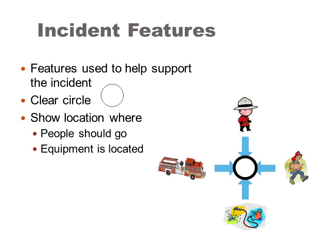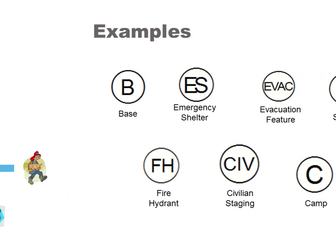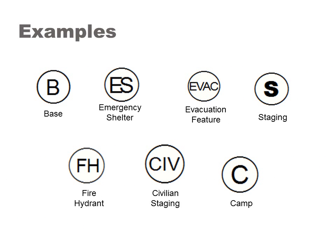Incident Features are features that help support the incident. They're noted by a clear circle, and they indicate where people should go or where equipment is located. Examples of these symbols are base, emergency shelter, evacuation features, staging, fire hydrant, civilian staging — or where civilians should congregate — and camp.